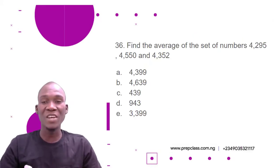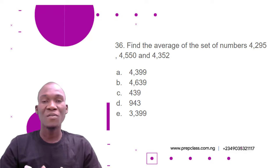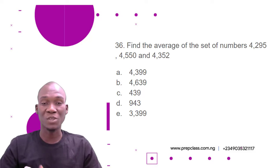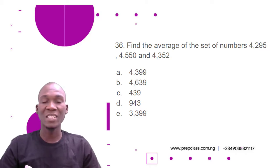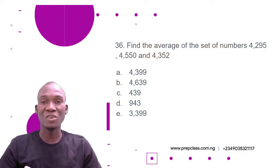Question number 36: Find the average of the set of numbers 4,295; 4,550; and 4,352. The options are: A) 4,399, B) 4,639, C) 4,439, D) 943, E) 3,399.